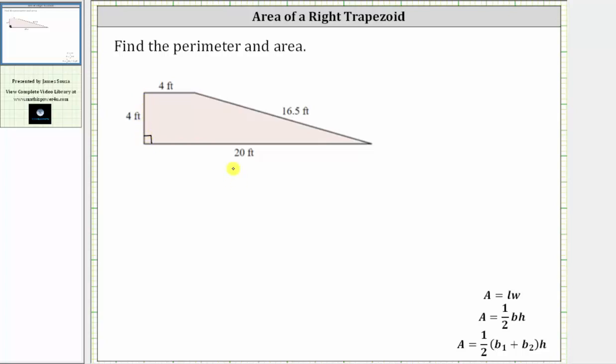Let's first find the perimeter. To find the perimeter of any polygon, we add the lengths of all the sides because the perimeter is the distance around the outside. So the perimeter of the right trapezoid is equal to, let's start here at 20 feet plus four feet, plus four feet, plus 16.5 feet.